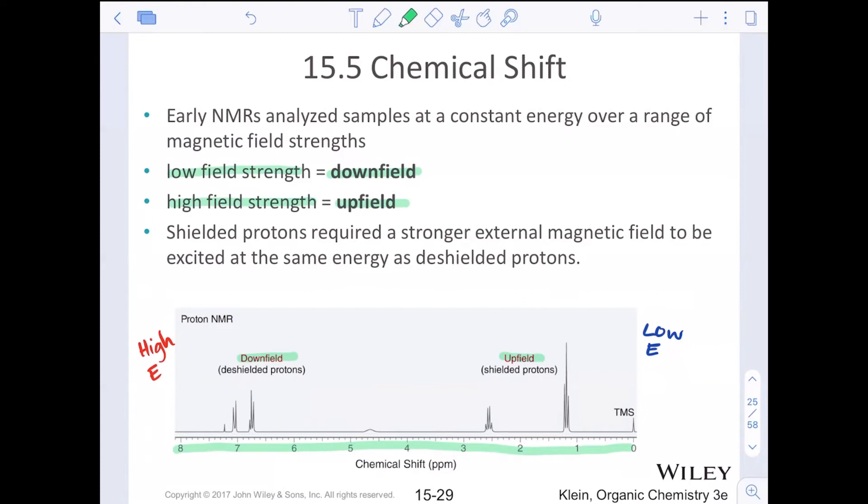Where I write high energy here, these deshielded protons have a larger energy gap, and they're absorbing more energy from the radio waves. And then the low energy here on the upfield. Because electrons are still surrounding the nuclei, they are shielded protons, shielded nuclei. Then they tend to absorb lower energy radio waves.